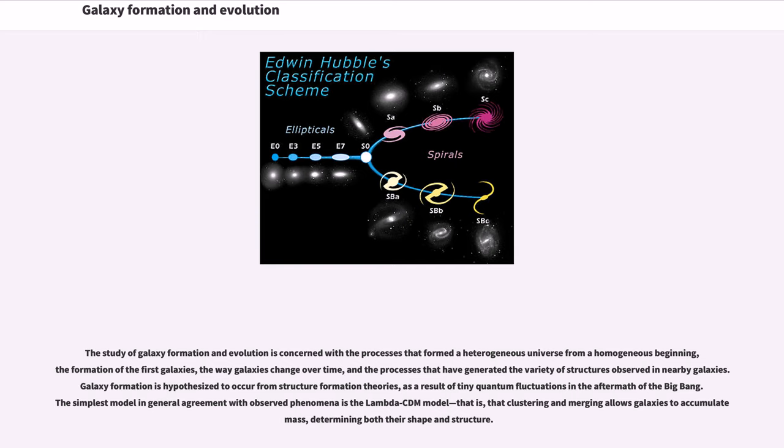Galaxy formation is hypothesized to occur from structure formation theories, as a result of tiny quantum fluctuations in the aftermath of the Big Bang. The simplest model in general agreement with observed phenomena is the Lambda-CDM model, that is, that clustering and merging allows galaxies to accumulate mass, determining both their shape and structure.